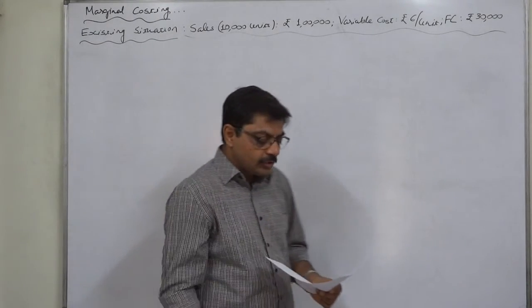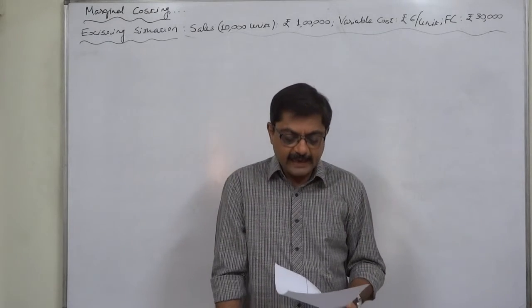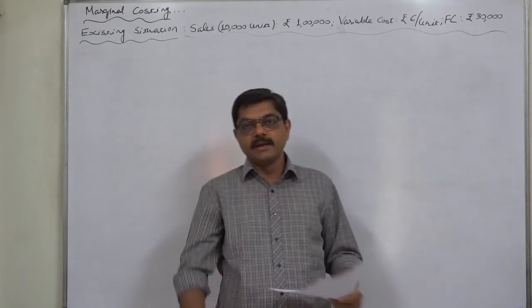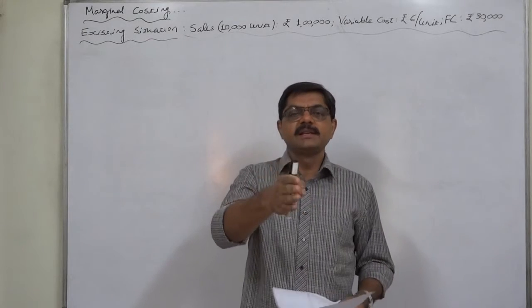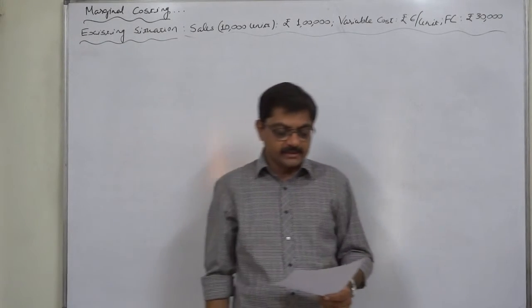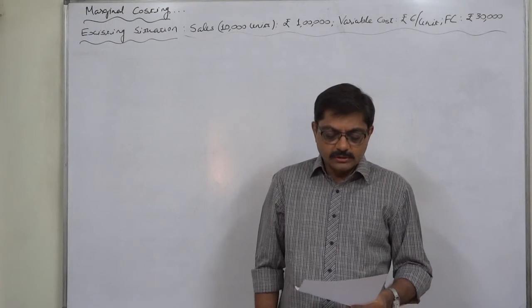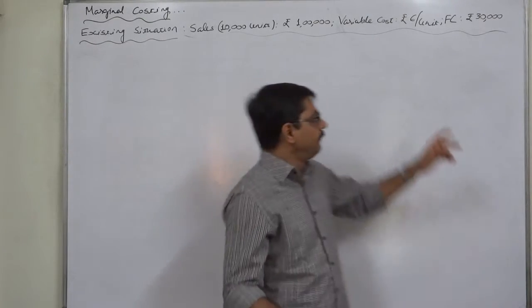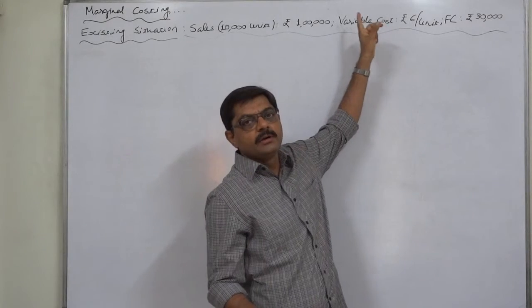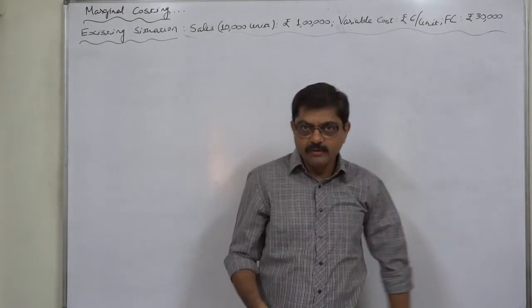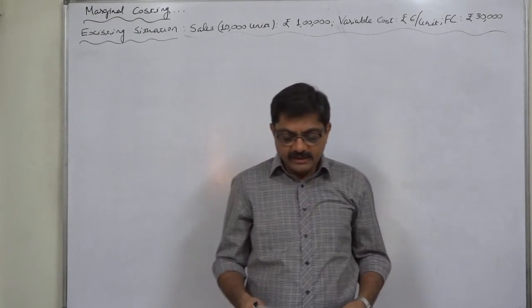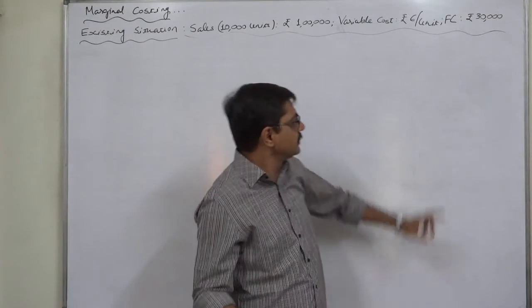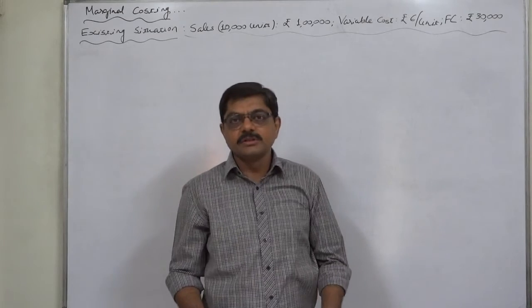Calculate revised values of all these four if: A) the selling price is increased by 20 percent or decreased by 20 percent — two different situations. B) the variable cost increases or decreases by rupee 1 per unit — again two different situations. And C) the fixed cost increases or decreases by 10 percent — again two situations.